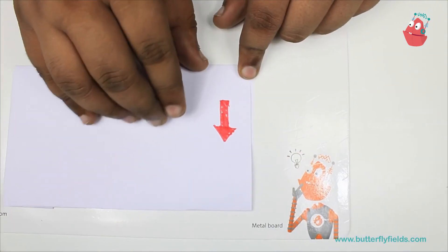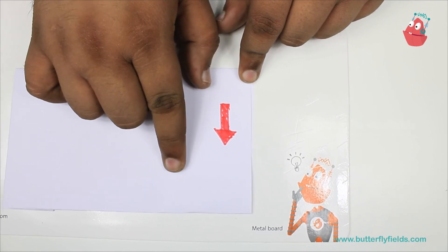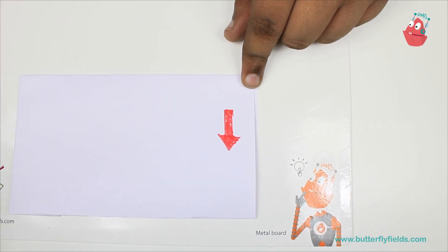So now, I have this red arrow pointing downwards. Let's observe through the lens bit what happens.